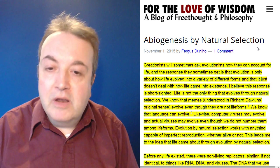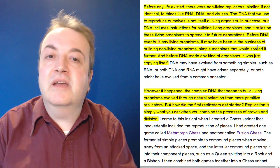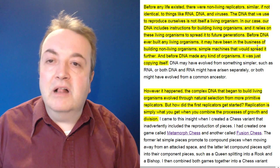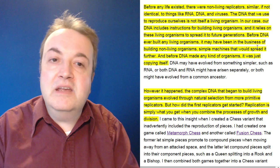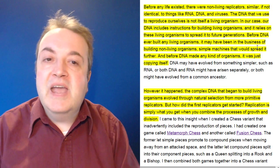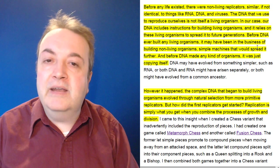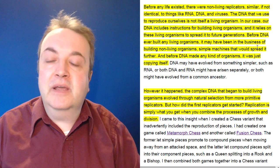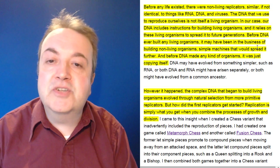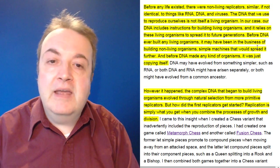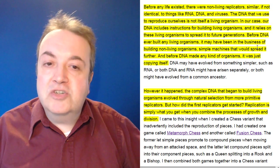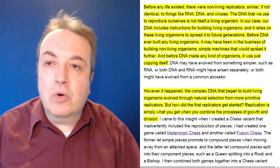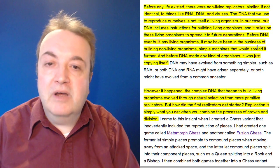Before any life existed, there were non-living replicators similar if not identical to things like RNA, DNA, and viruses. The DNA that we use to reproduce ourselves is not itself a living organism. In our case, our DNA includes instructions for building living organisms and it relies on these organisms to spread it to future generations. Before DNA ever built any living organisms, it may have been in the business of building non-living organisms, simple machines that would spread it further. And before DNA made any kind of organisms, it was just copying itself. However it happened, the complex DNA that began to build living organisms evolved through natural selection from more primitive replicators.